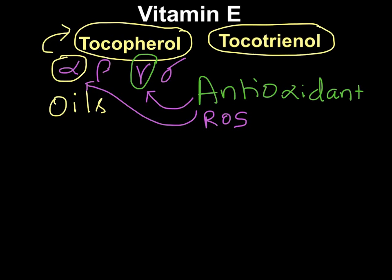Having sufficient vitamin E and its antioxidant activity will spare the antioxidant activity of glutathione, preserving it for glutathione peroxidase-related activities. Similarly, ascorbate, which is another vitamin with antioxidant properties, also spares glutathione. So these antioxidants work synergistically in our body.